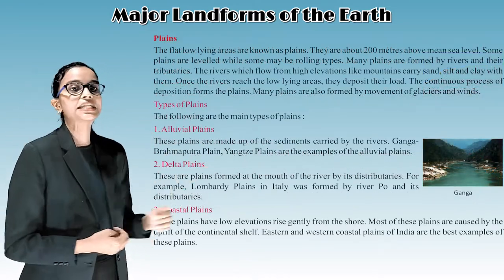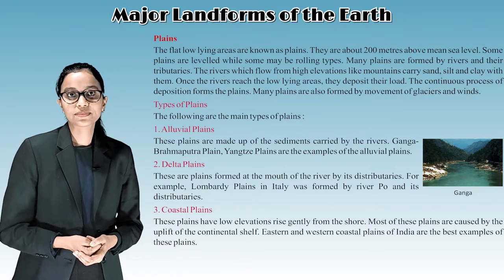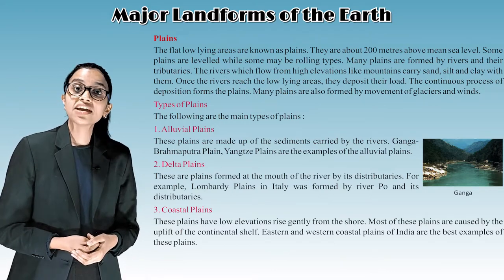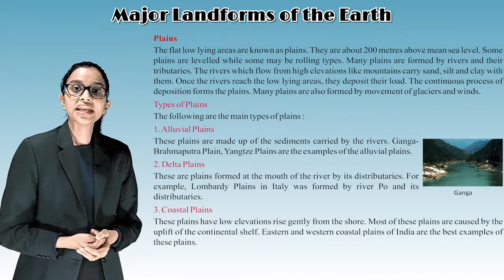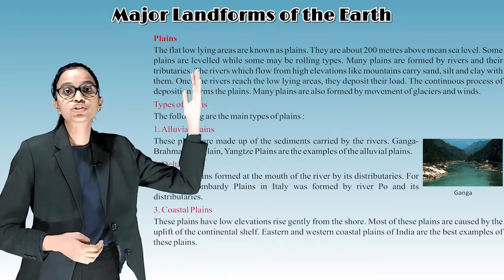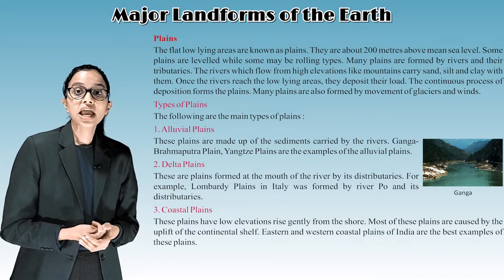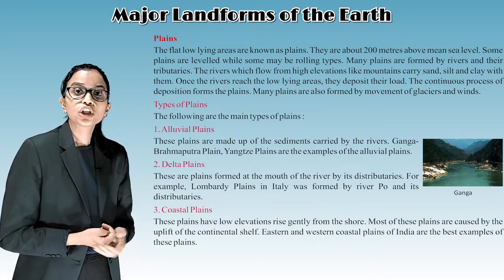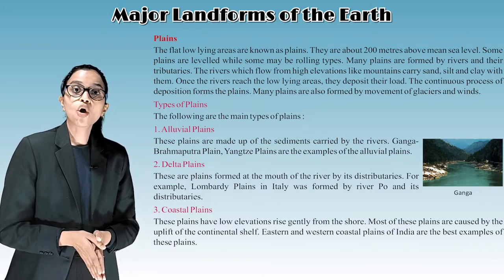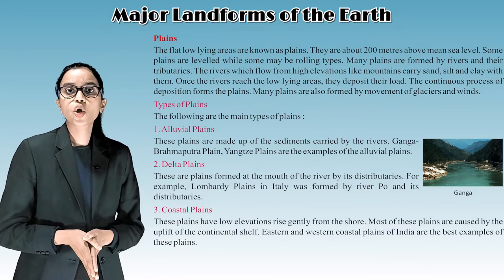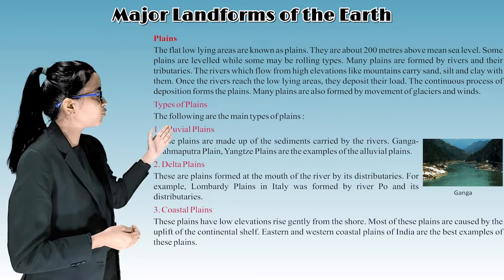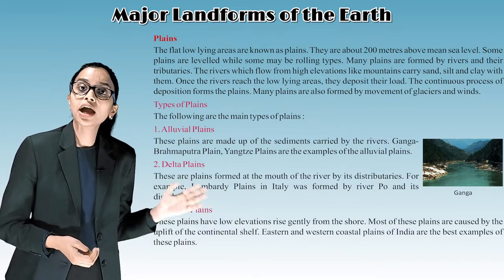The flat low-lying areas are known as plains. They are about 200 meters above mean sea level. Some plains are level while others may be rolling. Many plains are formed by rivers and their tributaries. Rivers flowing from high elevations like mountains carry sand, silt, and clay. Once rivers reach low-lying areas, they deposit their load, and this continuous process of deposition forms the plains. Many plains are also formed by movement of glaciers and winds.